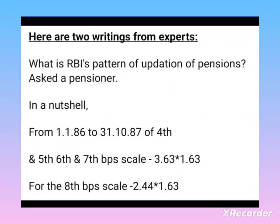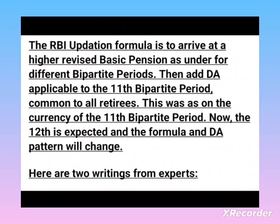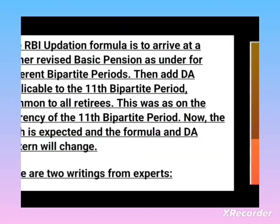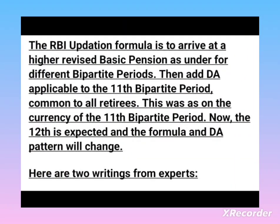Let's start. The RBI operation formula is to arrive at a higher revised basic pension as follows: for different bipartite periods, then add the DA applicable to the 11th bipartite period, common to all retirees, as on the currency of the 11th bipartite period.